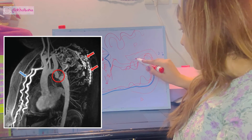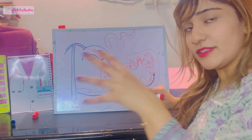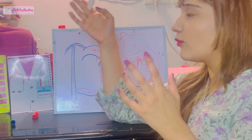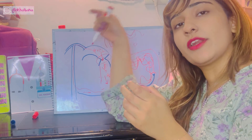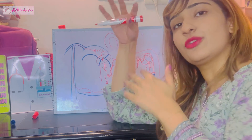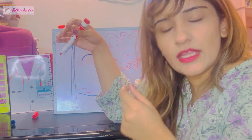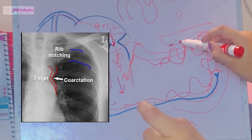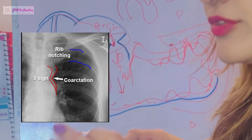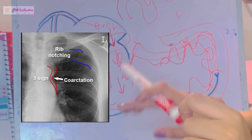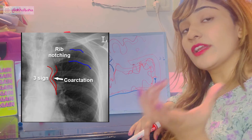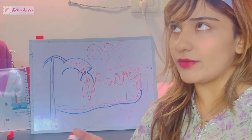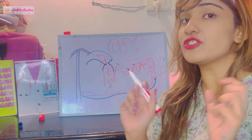These engorged, pulsating intercostal arteries lie in the intercostal spaces in contact with the ribs. Over time, their constant pulsation against the ribs causes erosion — like repeatedly knocking on a wall until the paint comes off. This erosion of the ribs is called notching of the ribs, and it appears as a characteristic sign on an X-ray. It is caused by intercostal arteries under high blood pressure.